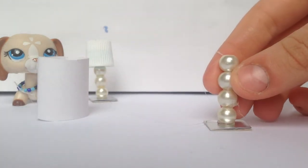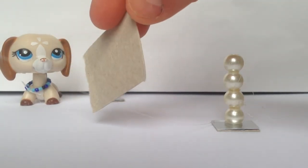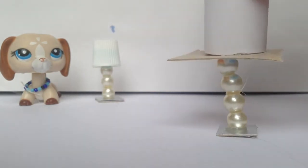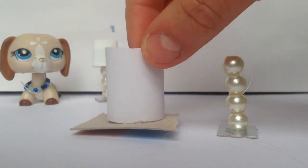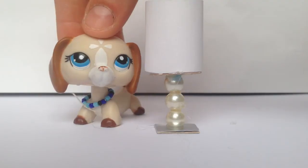Then you want to get another piece of cardboard and stick it to the bottom of your lampshade. This will prevent the lampshade from falling when you push it down. Then you want to cut off all the excess. I actually removed one bead because I thought it was too tall. Now you want to glue on your lampshade, and that's it.